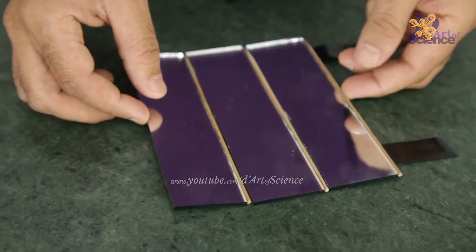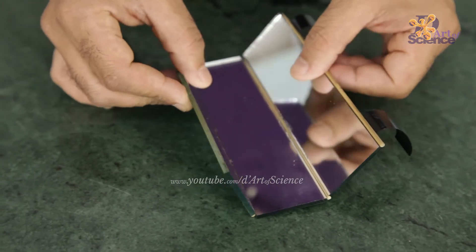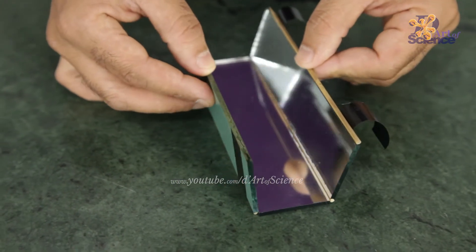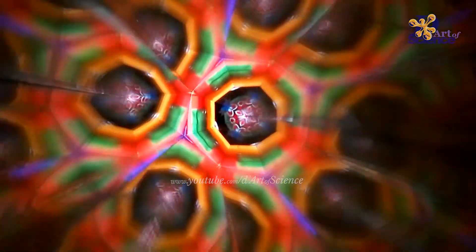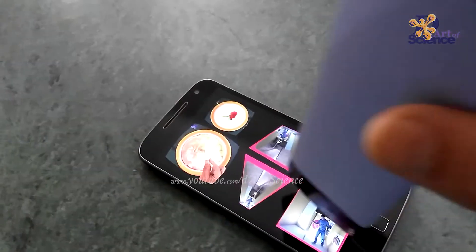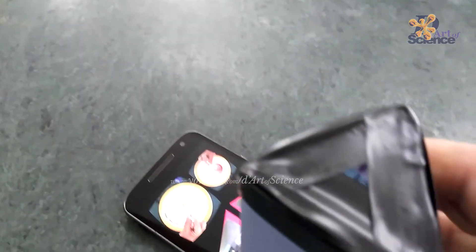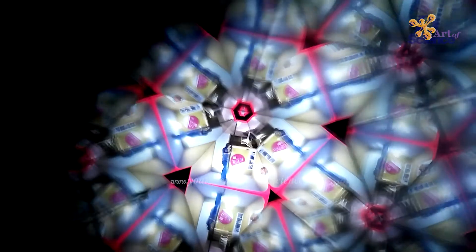The kaleidoscope is sold as a toy in many places and in that there are 3 mirrors forming a long equilateral triangle and this creates beautiful patterns using multiple reflections happening inside. In the TIY, I will show you how to make a unique kaleidoscope that has no broken pieces of small glass bangles or anything inside. You can actually put this on any screen and it becomes a kaleidoscope.